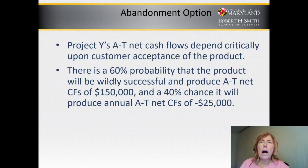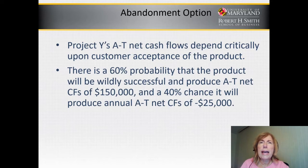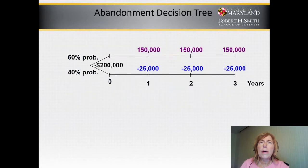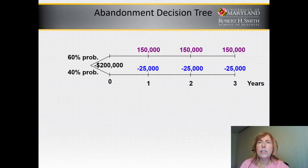However, Project Y's after-tax cash flow depends critically upon customer acceptance of the product. There's a 60% chance that the product will be wildly successful and produce after-tax cash flows of $150,000, but a 40% chance it'll produce negative after-tax cash flows of negative $25,000. Consequently, we draw a decision tree representing both outcomes — the 60% probability of success and the 40% probability of getting negative cash flows — and add the respective yearly cash flows to each line.